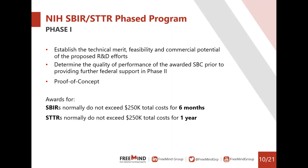The NIH SBIR and STTR programs are structured in different phases. The phase one objective is to establish the technical merit, feasibility, and commercial potential of the proposed R&D project — really a proof-of-concept phase — and to determine the quality of performance of the small business before providing further federal support in phase two. For the award budget, both SBIRs and STTRs do not exceed $250,000 in total costs. The project period for SBIR phase one is six months, and for STTR it's one year.